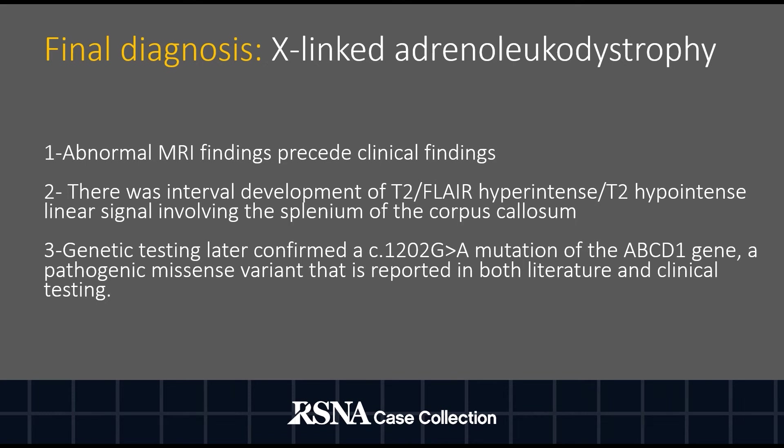Second, there was interval development of T2-FLAIR hyperintense and T2-hypointense perimeter signal involving the splenium of the corpus callosum. Third, genetic testing later confirmed a C1202 mutation of the ABCD1 gene, causing an amino acid change from glutamine to arginine. This is a pathogenic missense variant reported in both literature and clinical testing.